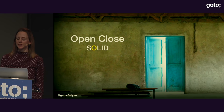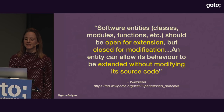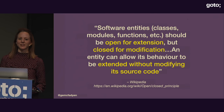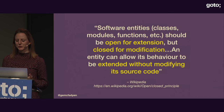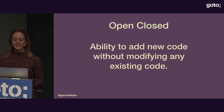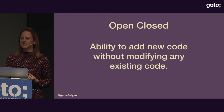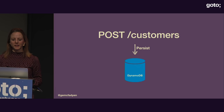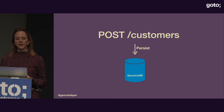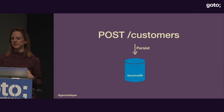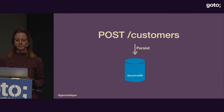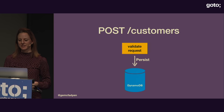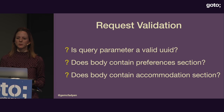The next principle is the Open-Closed Principle. This states that you should be able to extend functionality without modifying the source code. That sounds like an oxymoron — how do you change something if you can't touch the source code? I try to think of it as: it should be the ability to add new code without changing any of the existing code. Reminding ourselves of our POST endpoint: when a user searches for accommodation, we persist the search preferences into the database.